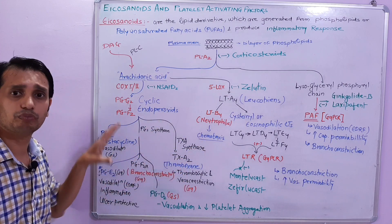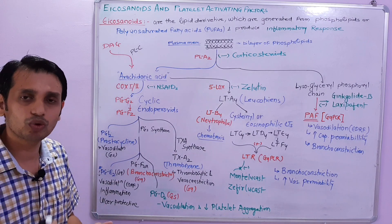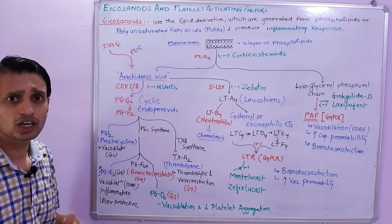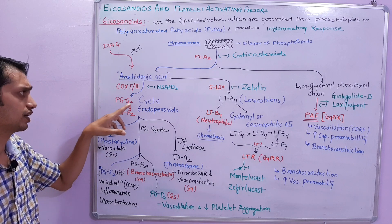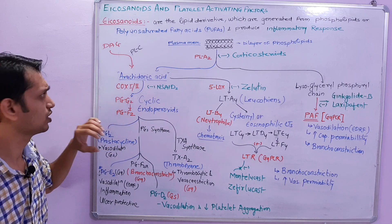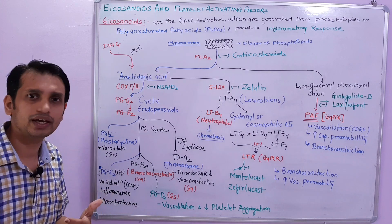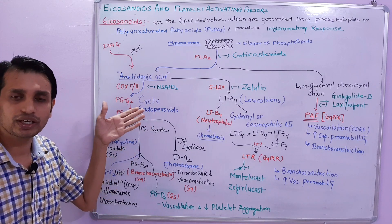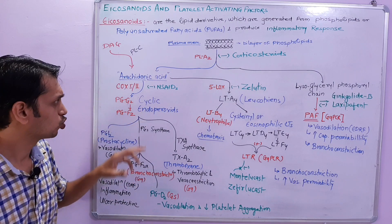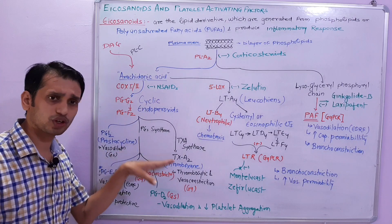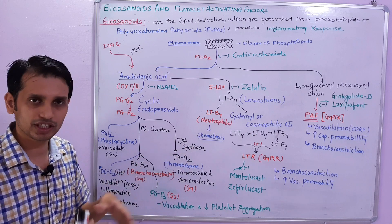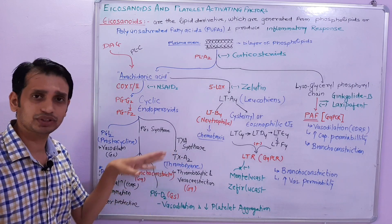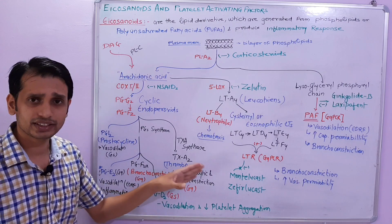This triggers the inflammatory response: inflammation, swelling, redness, pain, and fever. Arachidonic acid is further converted to cyclic endoperoxides like PGG2 and PGH2, which are the prostaglandin precursors. COX-1 and COX-2 enzyme, which we learn in NSAIDs — NSAIDs are inhibitors of COX enzyme, means cyclooxygenase enzyme. In the presence of cyclooxygenase enzyme, arachidonic acid converts into these cycloendoperoxides. These cycloendoperoxides are further converted into thromboxane with the activity of thromboxane synthase enzyme, producing TXA2.